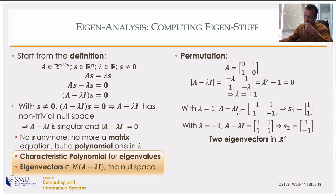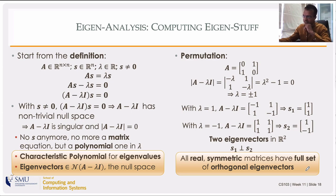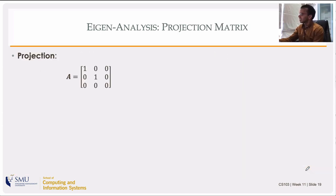We have two eigenvectors in R² for a 2×2 matrix. Notice these two eigenvectors s1=[1,1] and s2=[1,-1] are actually orthogonal: s1ᵀ·s2 = 1·1 + 1·(-1) = 0. That is not an accident — all real symmetric matrices have a full set of orthogonal eigenvectors. 'Full set' means for an n×n matrix, you have n eigenvectors, all orthogonal.